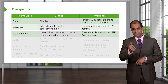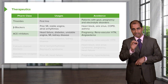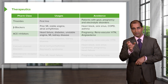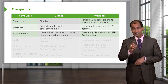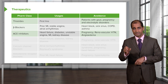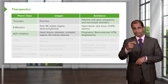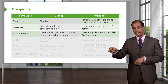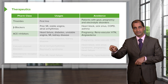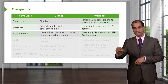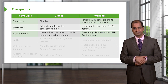Pregnancy, renal vascular hypertension, and angioedema are conditions in which you try to avoid ACE inhibitors at all costs. Definitely pregnancy, because it's a teratogen — not only will it affect the pregnant patient, but it will kill the fetus. It kills the fetal kidneys, and you don't want that.